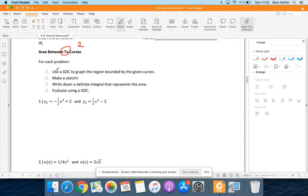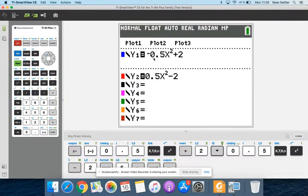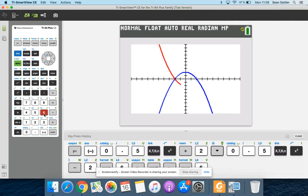So for each problem, use a GDC to graph. So I've already plugged these equations into my graphing calculator right here. I just used decimals instead, and then I hit zoom six, and there we go.